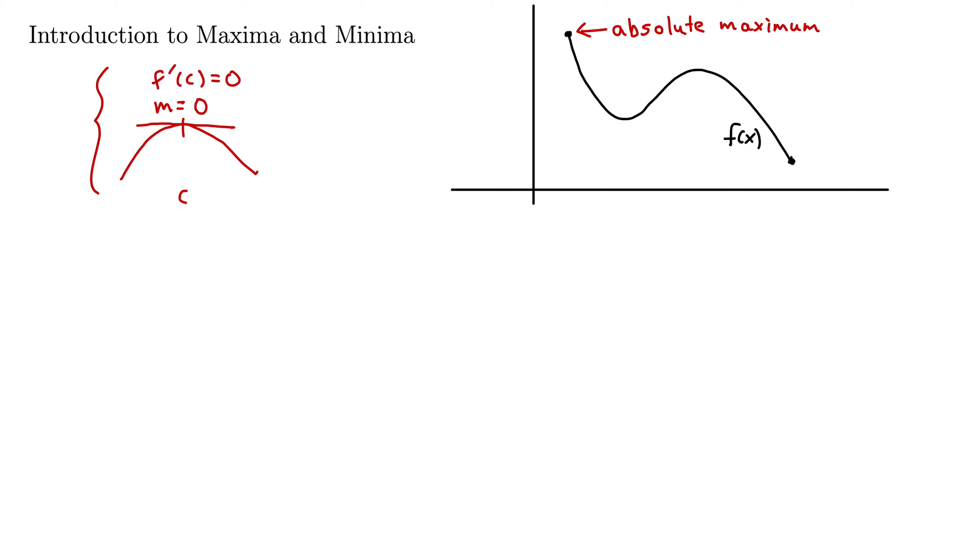Similarly, we have an absolute minimum down for the lowest possible point. Now we also have two other points of interest in this graph. This little bump right here and this bump right here. These are what we call local extrema. So we have a local maximum here where it goes up and then comes back down.